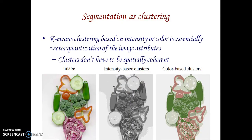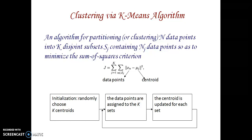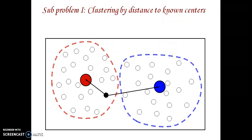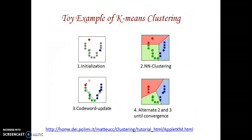K-means clustering techniques are available, based on intensity or color, essential for vector quantization of image attributes. We partition N data points into K disjoint subsets to minimize the sum-of-squares criterion. We randomly initialize K centroids, assign data points to K sets, then update the centroid values. There are two clusters — we identify the two cluster centers, initialize clusters, group pictures nearest to each cluster, and repeatedly choose the cluster center until we get the desired result.